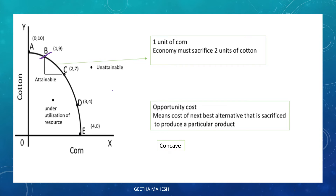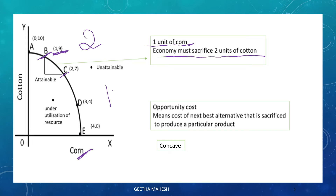Let us understand a few more concepts using the production possibility curve. Suppose an economy was producing combination B — 1 unit of corn and 9 units of cotton — and wants to move to combination C to have one more additional unit of corn. In that situation, it has to give up 2 units of cotton. To gain one unit of corn, the economy must sacrifice 2 units of cotton. This is called opportunity cost — the cost of the next best alternative sacrificed to produce a particular good. It is also called economic cost or alternative cost.